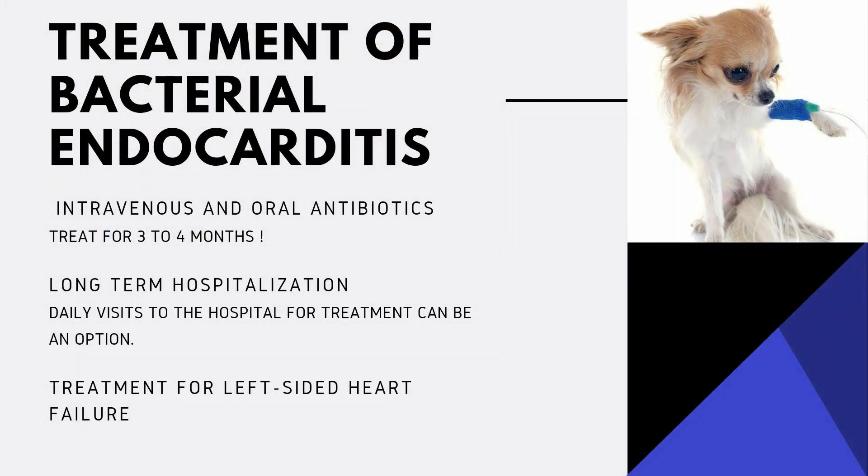Antibiotics are used in most dogs for at least 3 to 4 months. Ideally, the antibiotics are given intravenously for the first 1 to 2 weeks. This often requires daily visits to the veterinary hospital or prolonged hospitalization. The bacteria are protected on the valve leaflets by thickened tissues, so prolonged therapy is needed.